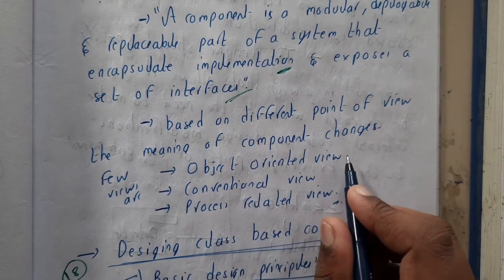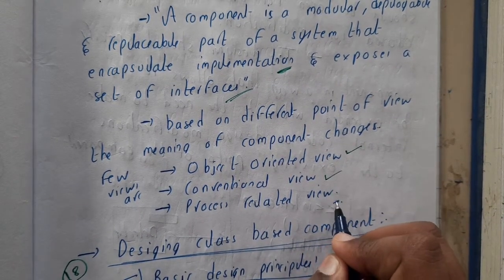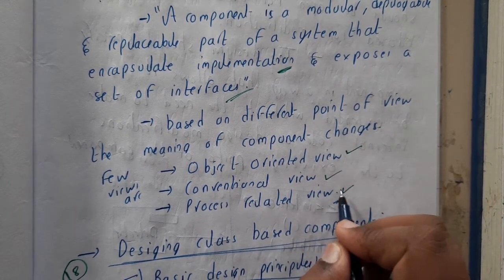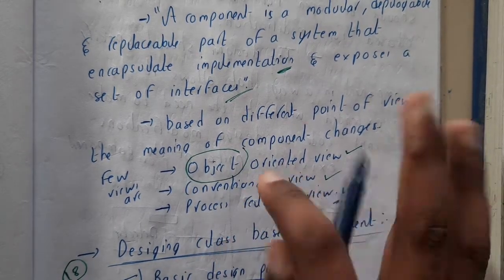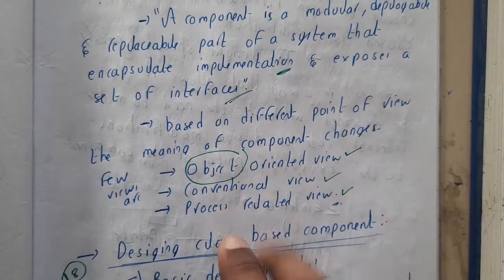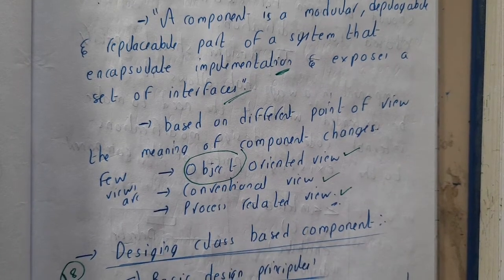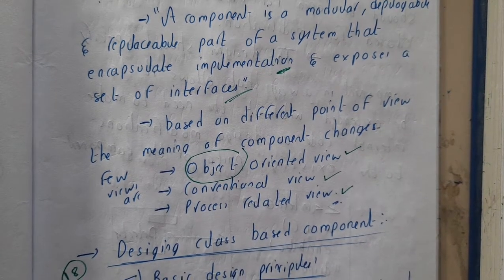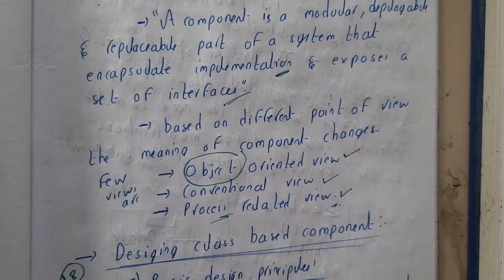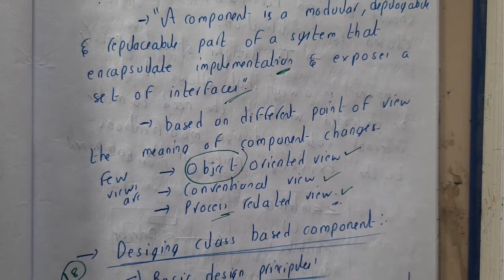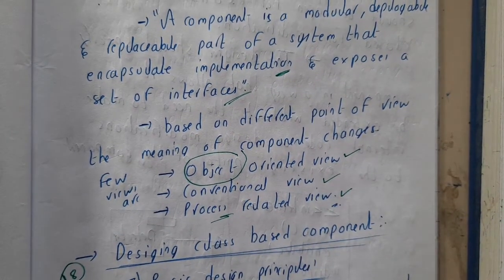Based on different points of view, the meaning of a component changes. Some use an object-oriented view, some use a conventional view, and some use a process-related view. Someone might say it shows the relation between objects, another might describe the overall conventional view, and another might describe a particular process.